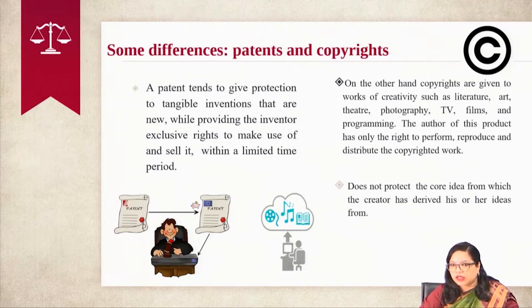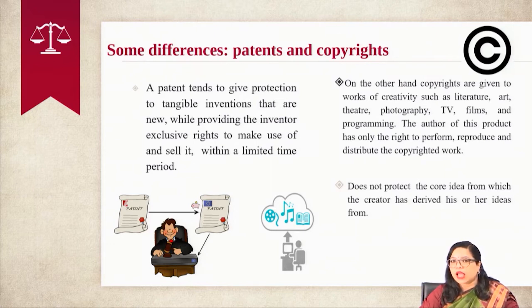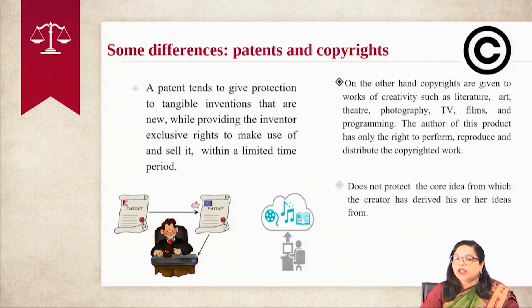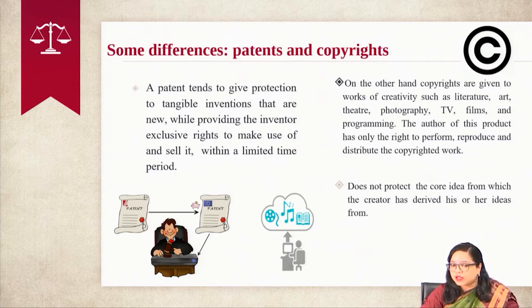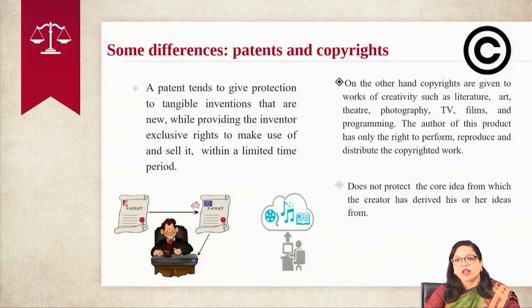When aspects of differences arise between the open source world and the legal license, the legal system usually provides rights and protection for intellectual properties. Among them, the patents and copyright protection which we have already touched upon. A patent tends to give protection to tangible inventions that are new, while providing the inventor exclusive rights to make use and sell it within a limited period of time.